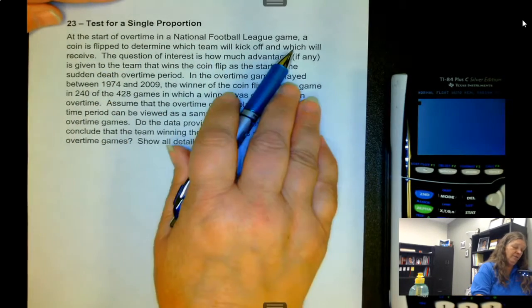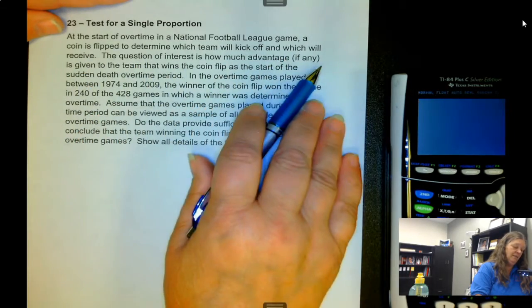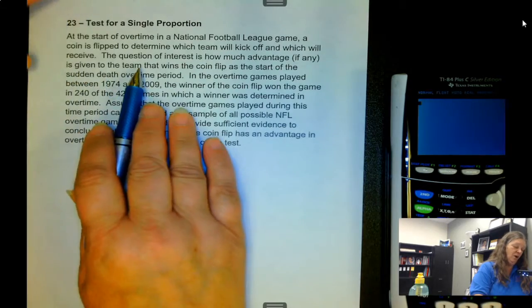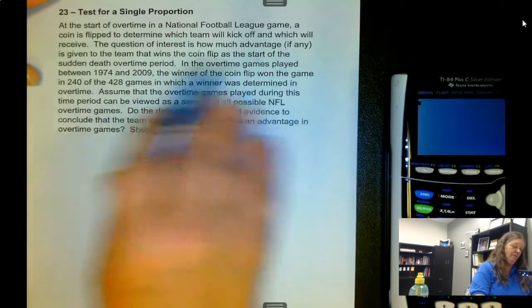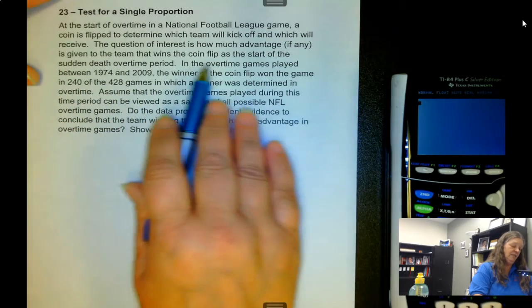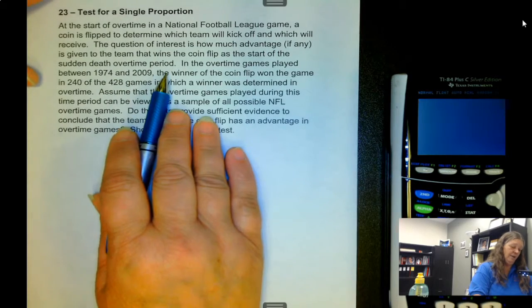At the start of overtime in a National Football League game, a coin is flipped to determine which team will kick off and which will receive. The question of interest is how much advantage, if any, is given to the team that wins the coin flip at the start of the sudden death overtime period.